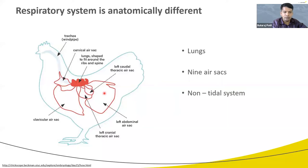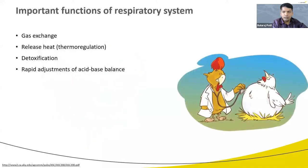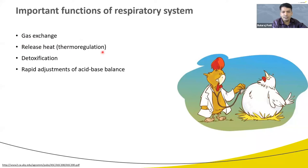Birds don't have a diaphragm, so they cannot cough. The movement of the lungs depends on the movement of the sternum and ribcage, which are involved in breathing. Now looking at important functions of the respiratory system — gas exchange is the most well-known function, involving the exchange of oxygen and carbon dioxide.